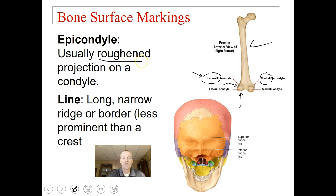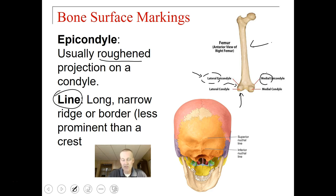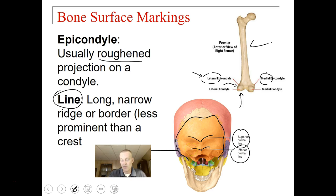Usually if something is roughened, it means something like ligaments or tendons will attach to it. A line is a long narrow ridge or border, slightly less prominent than a crest. A crest is similar to a line but larger and more prominent. Here on the occipital bone in the back of the skull we have the superior nuchal line and the inferior nuchal line. Any raised surface, line, or crest is a place where ligaments, tendons, or muscles attach.